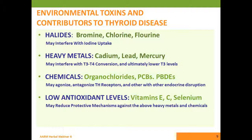Heavy metals are known to be problematic for the kidneys, liver, neurons, and tissues, and are known to trigger autoimmune diseases. Investigations suggest heavy metals such as cadmium, lead, and mercury may interfere with the conversion of T3 to T4, ultimately all being associated with lower T3 levels. Man-made chemicals generally — organochlorides, PCBs, and various plastics — are also known to antagonize thyroid hormone receptors and cause other sorts of endocrine disruption, as widely studied in the environmental toxicity literature.